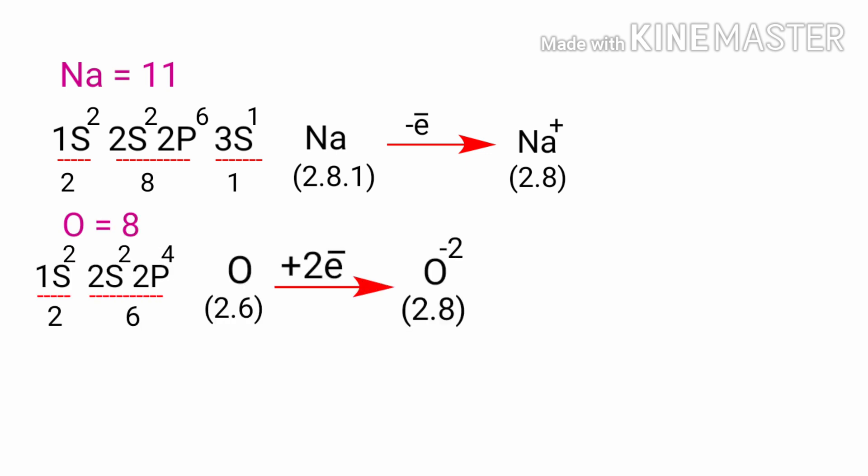Oxygen has six electrons in its outer shell. Again, it is more energy efficient for oxygen to gain two electrons than to lose six. Therefore, it tends to gain two electrons to create an ion with eight protons, eight neutrons and 10 electrons, giving it a net charge of minus two. It is now referred to as an oxide ion.